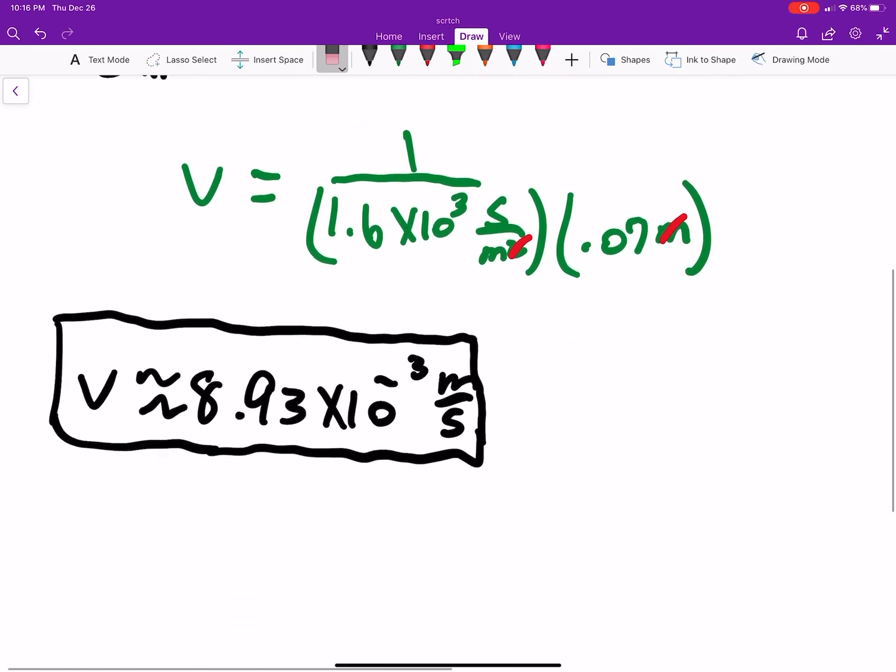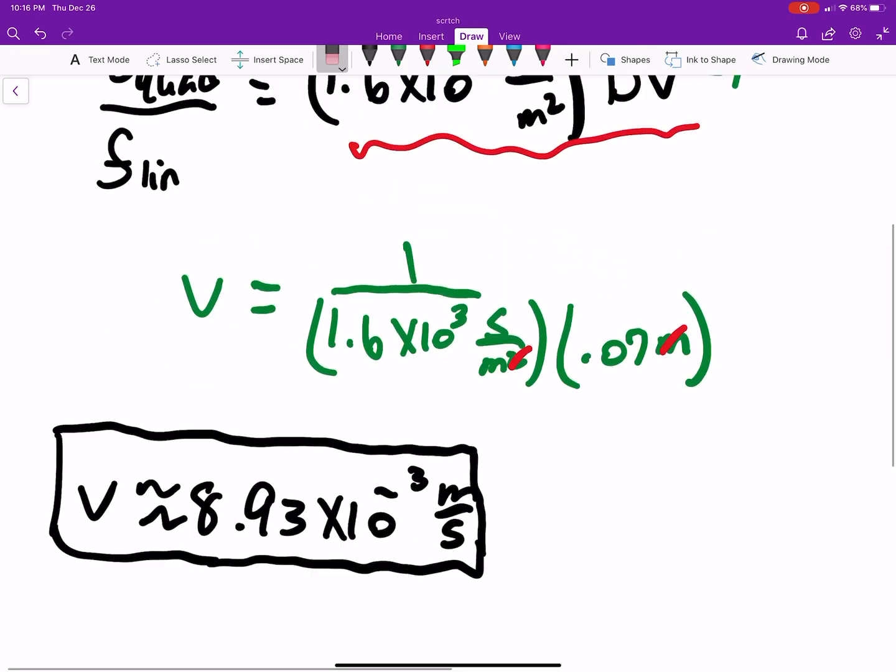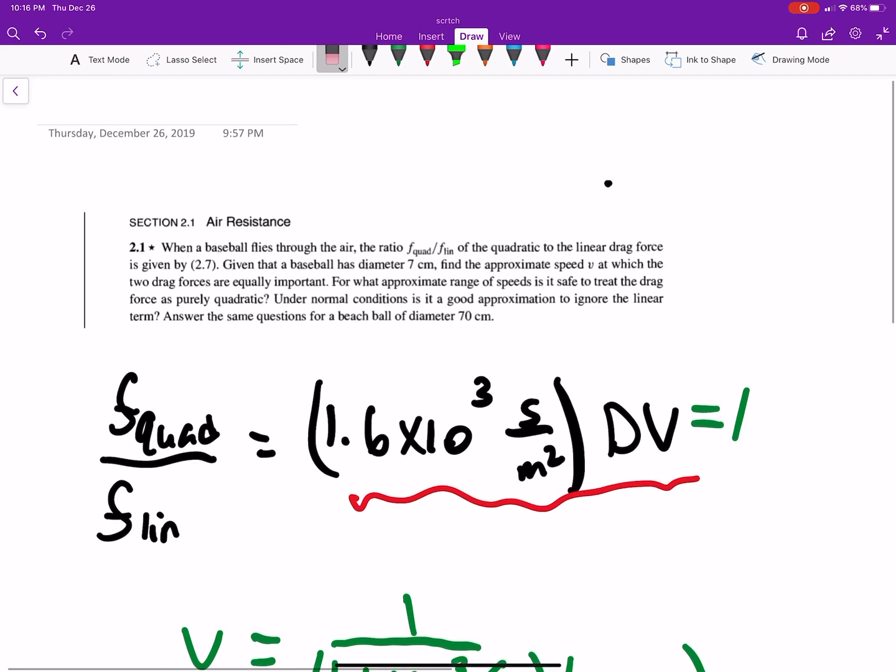We plugged in our knowns, and I got about 8.93 times 10 to the negative third meters per second. So that is the speed, that's the speed that the ball would have to go where you'll need to consider both quadratic and linear.